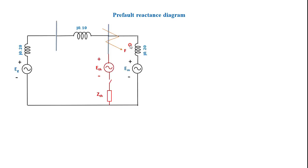Drawing the pre-fault reactance diagram: the generator has subtransient reactance of 0.20, the line has 0.10, and the motor has 0.20. The fault is occurring at the motor terminals. Our objective is to find the Thevenin equivalent seen from the fault point. The Thevenin open-circuit voltage equals the pre-fault voltage Vf, and we also need to find the Thevenin equivalent impedance seen from these two terminals.